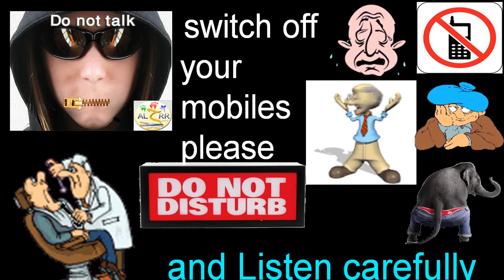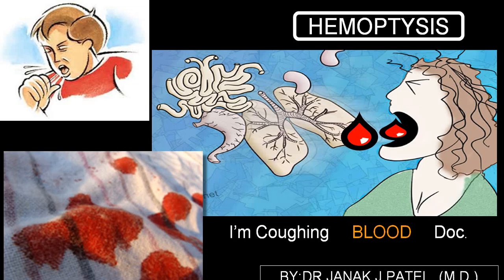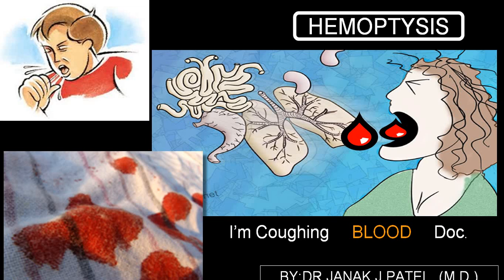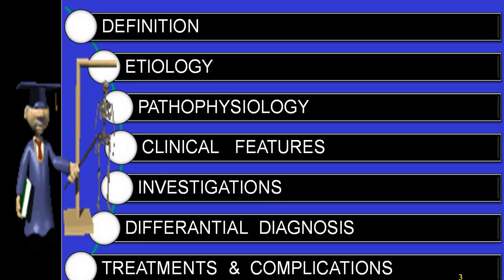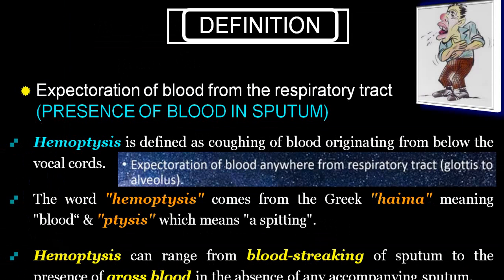Today we are going to discuss haemoptysis. It is the presence of blood in sputum. It can be defined as expectoration of blood from the respiratory tract, coughing of blood originating below the vocal cord, or expectoration of blood anywhere from the respiratory tract — that is, from the glottis to the alveolus. 'Haemo' means blood, 'ptysis' means spitting, so spitting of blood is called haemoptysis.